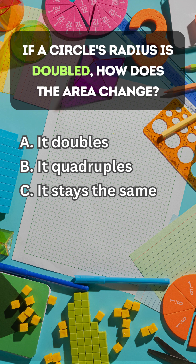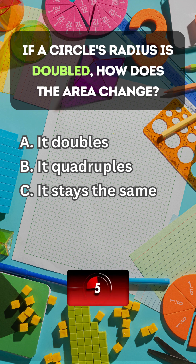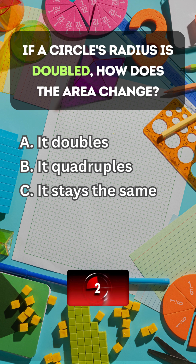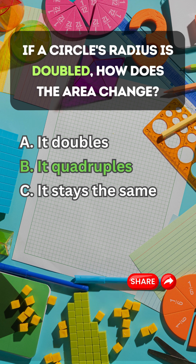If a circle's radius is doubled, how does the area change? Answer B. It quadruples.